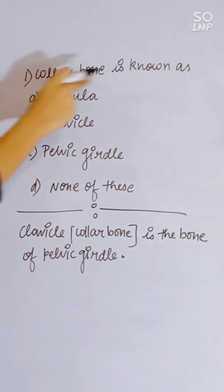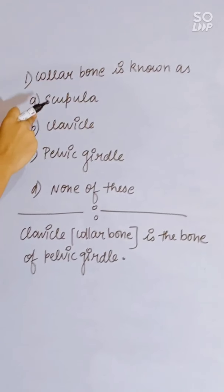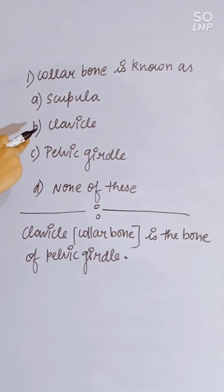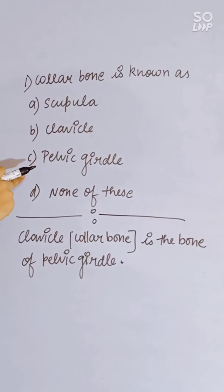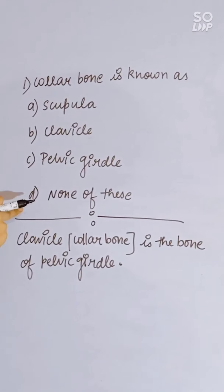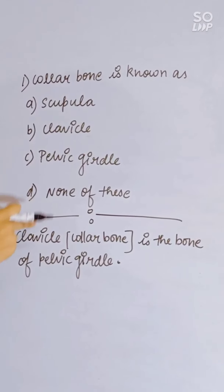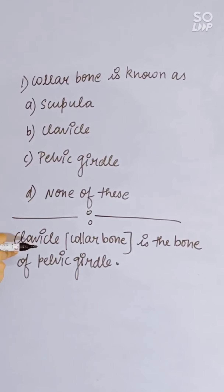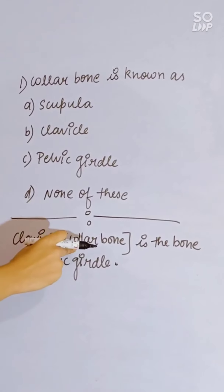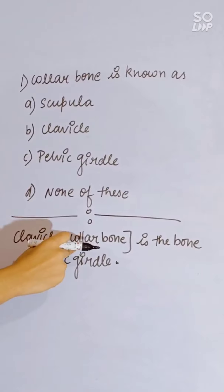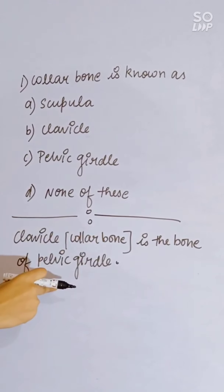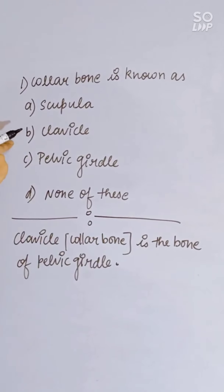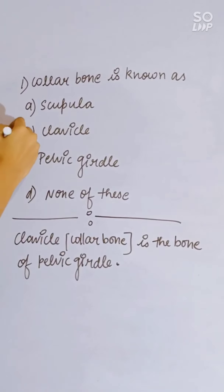The collar bone is known as: scapula, clavicle, pelvic girdle, or none of these. The clavicle is also known as the collar bone. Correct answer is B, clavicle.